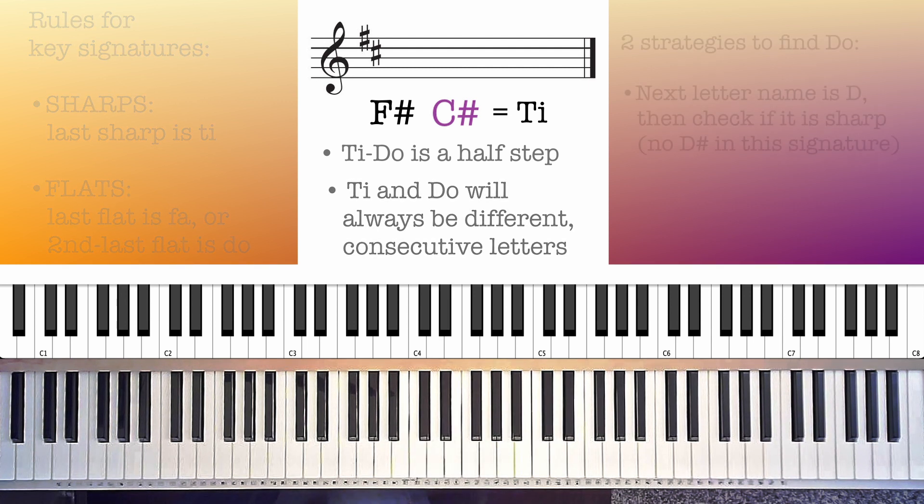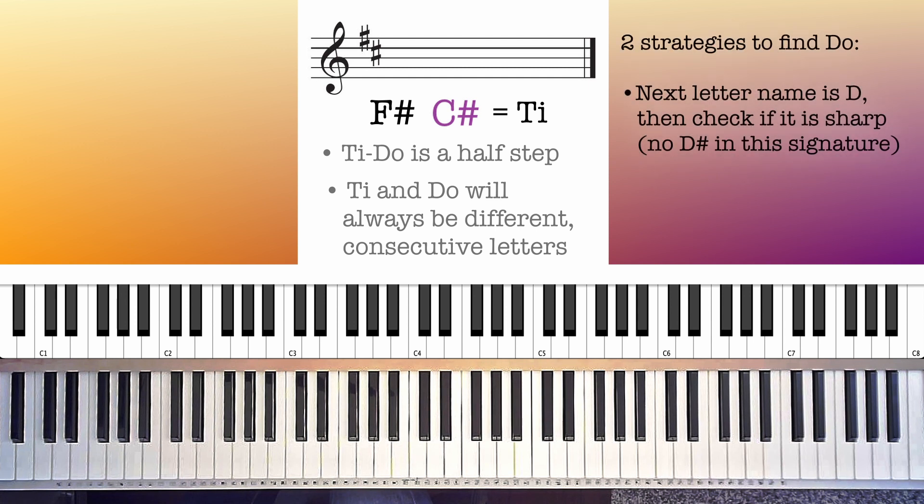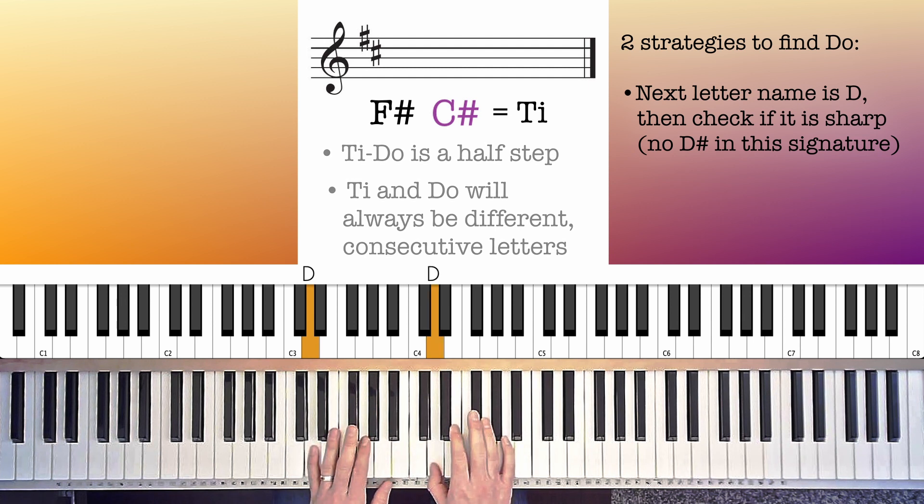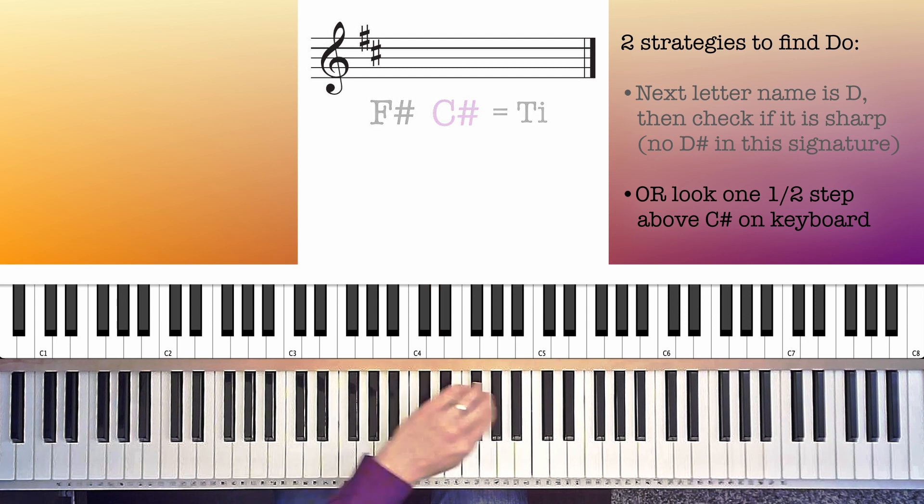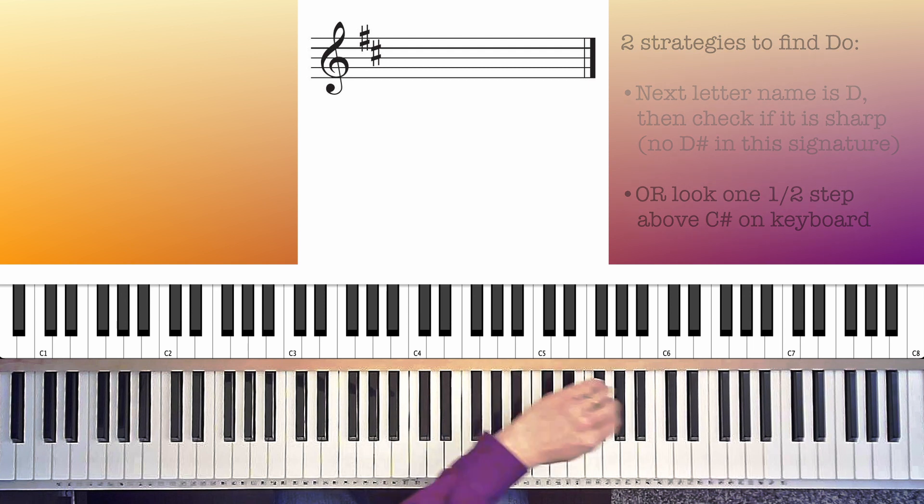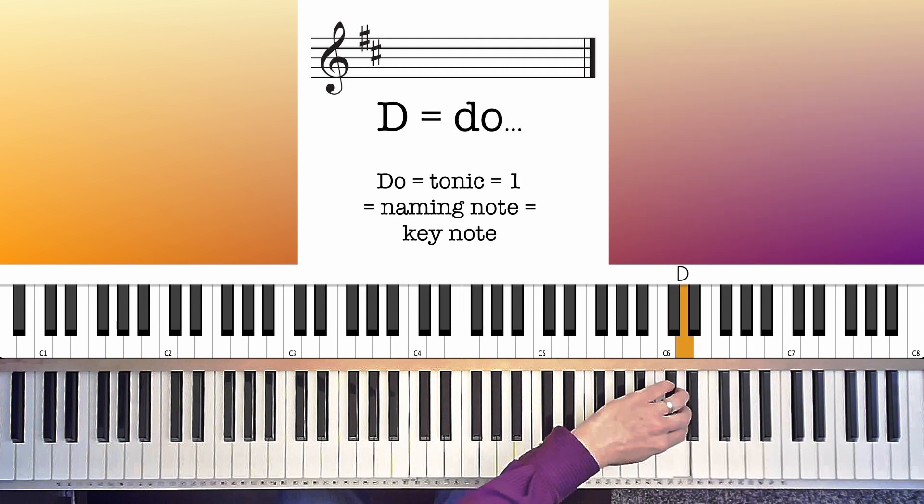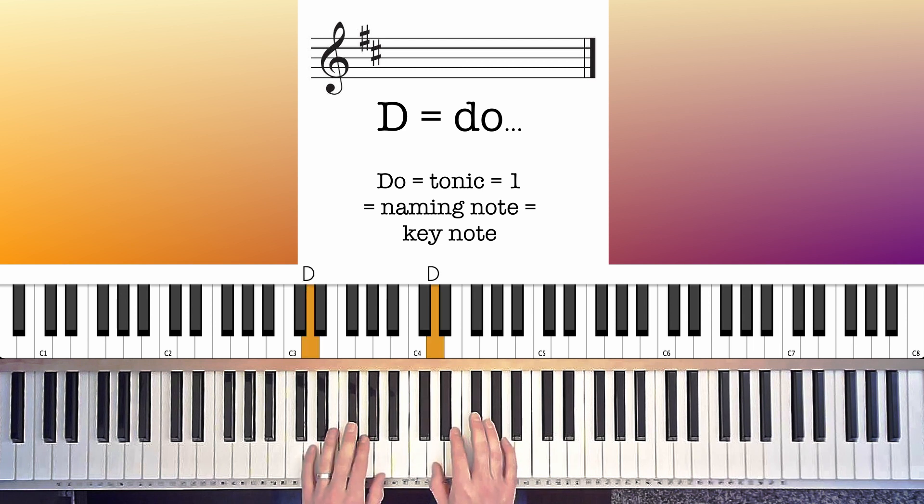If you understand these facts, there are two strategies you can use to be sure what Do is. One is to simply check this letter D against the key signature. Find out whether the key signature contains a D sharp. But our only two sharps, again, are F sharp and C sharp, so there is no D sharp, and obviously there is also no D flat. So we know we must be dealing with a D natural, in other words, a D that is neither sharp nor flat. The other strategy that's available to us is visual. You can look at a piano keyboard, find a C sharp, and move up or rightward exactly one half step. That means exactly one key of any color, not skipping even a part of any piano key, up to D. So D is Do, meaning this is the key of D, also known as D major.